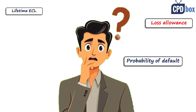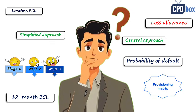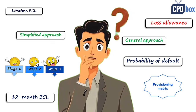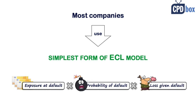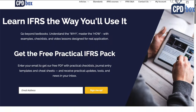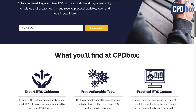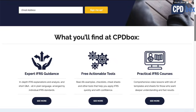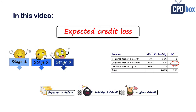Expected credit losses under IFRS 9 are often explained in a very technical and sometimes complicated way. But the point is that most companies only need the simplest form of the model. And once you see and learn it with visuals, it won't look as difficult. I am Sylvia of CPDBox, the website with loads of IFRS checklists, Excel files, explanations and more. In this video, I'll walk you through the ECL logic the way I teach it in my IFRS courses — short, practical and using numbers you can follow.